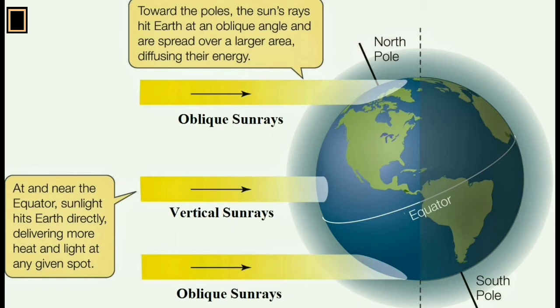High latitudinal region has oblique sun rays. Toward the poles, the sun rays hit earth at an oblique angle and are spread over a larger area, diffusing their energy.